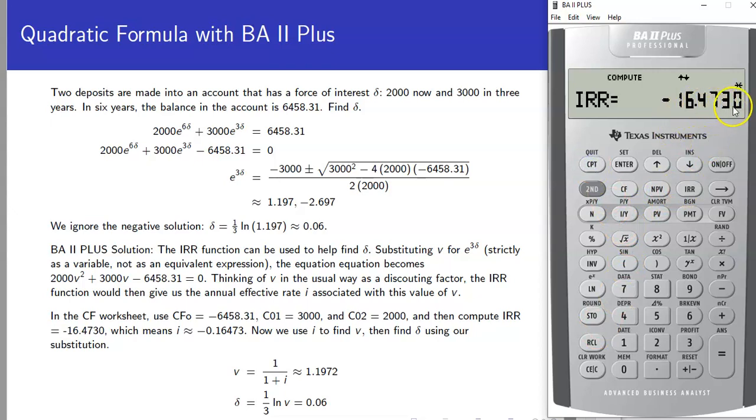Go over to internal rate of return and hit compute. We get 16.473 and this is an interest rate, so we would divide that by 100 to get the actual interest rate.